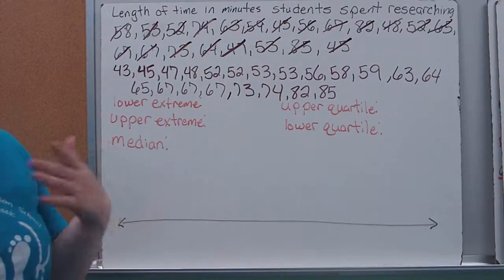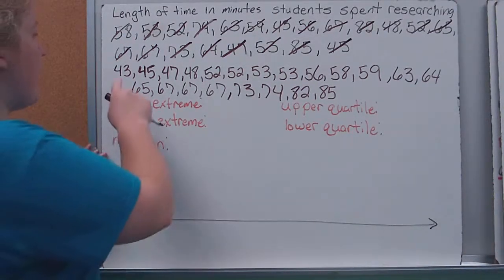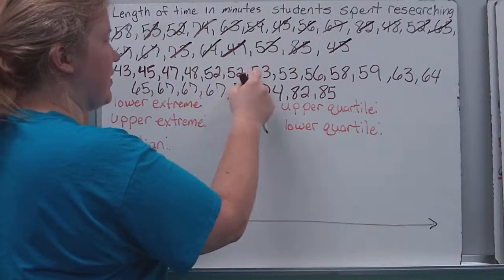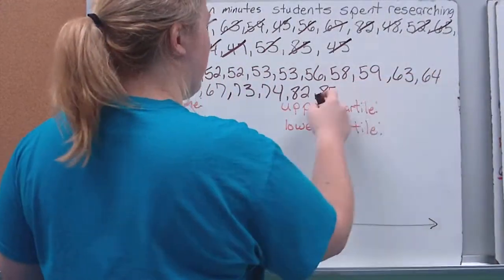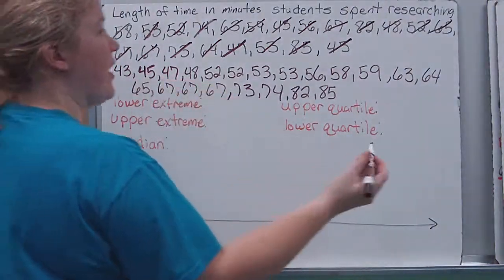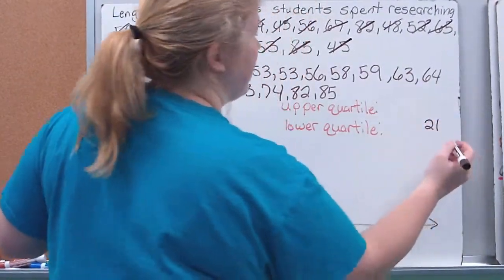So then I just want to count up how many data points do I have again. I've got 1, 2, 3, 4, 5, 6, 7, 8, 9, 10, 11, 12, 13, 14, 15, 16, 17, 18, 19, 20, 21. I've got 21 data points. Good to know.